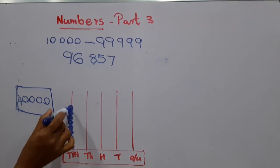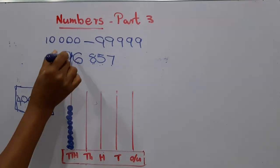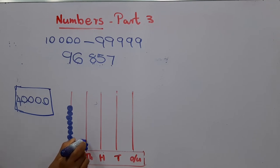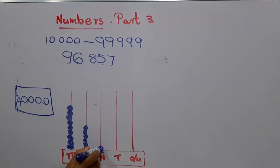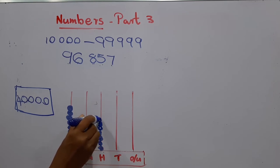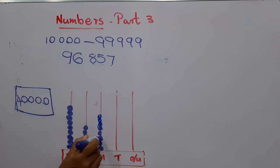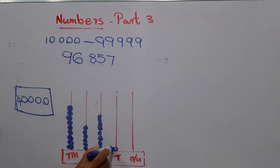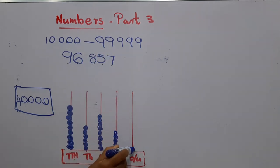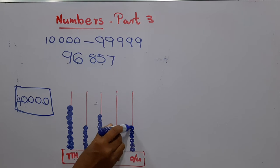We place nine rings at ten-thousands: one through nine. Under thousands, there must be six rings: one through six. Under hundreds, there must be eight rings: one through eight. Under tens, there must be five rings: one through five. Under ones, there are seven rings: one through seven. The abacus now represents ninety-six thousand eight hundred and fifty-seven.